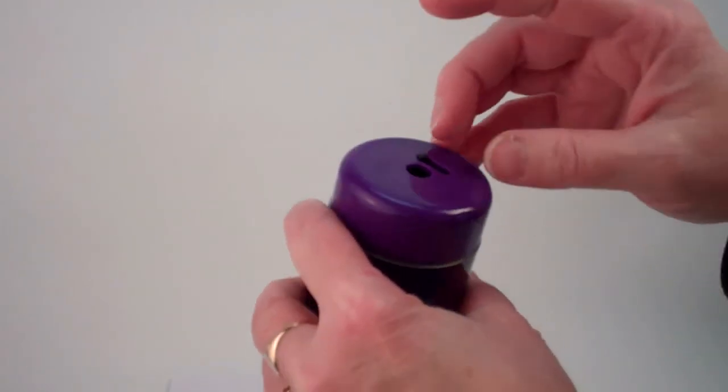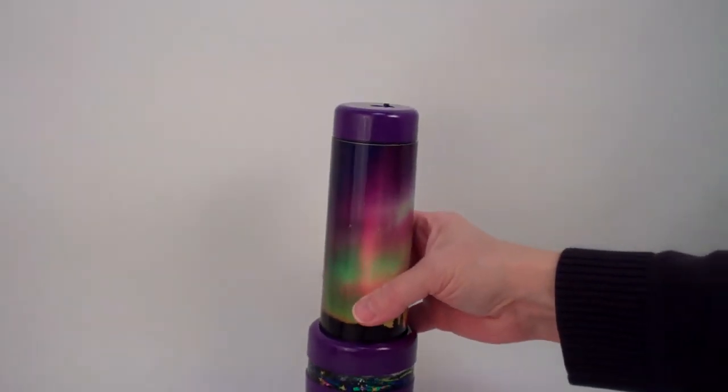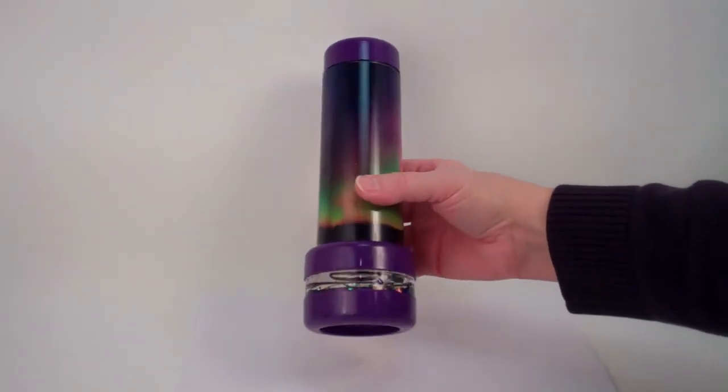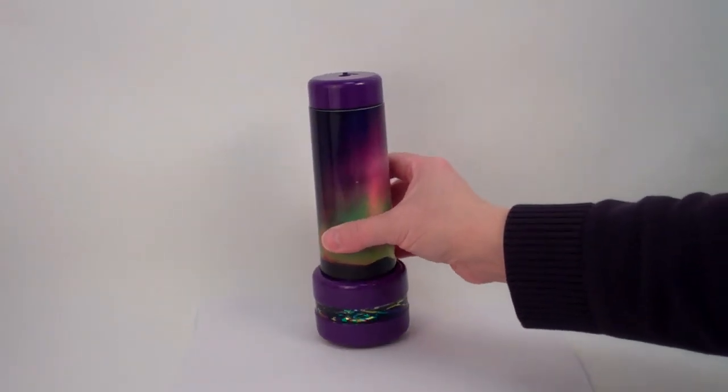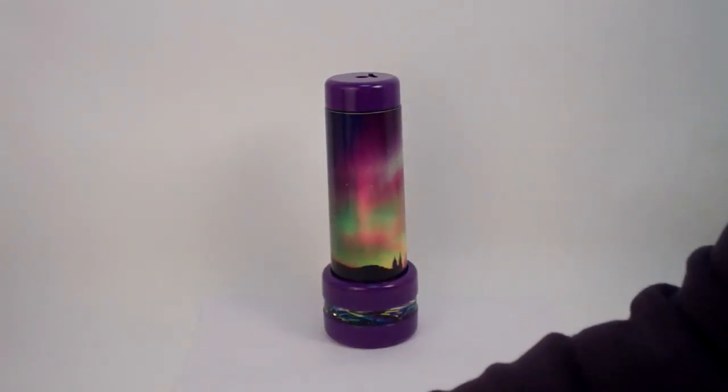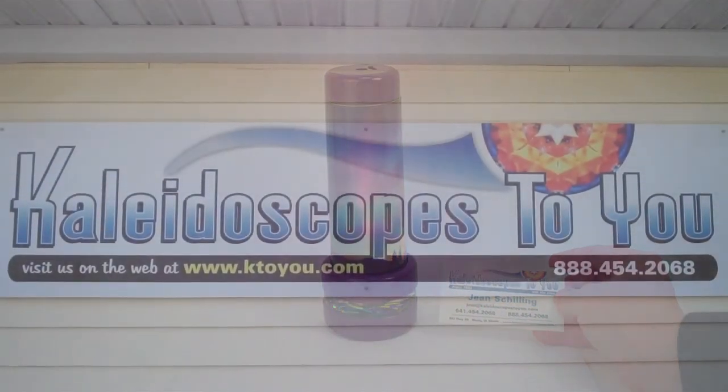Now the eye cap does have a dust cover that will close and reopen. And this is the Northern Lights Color Spirit Kaleidoscope, created by Carl Schilling and currently available here at Kaleidoscopestou.com.